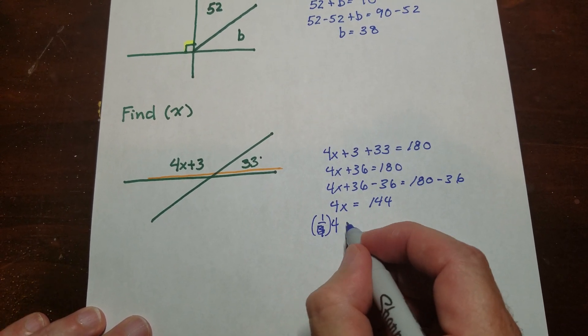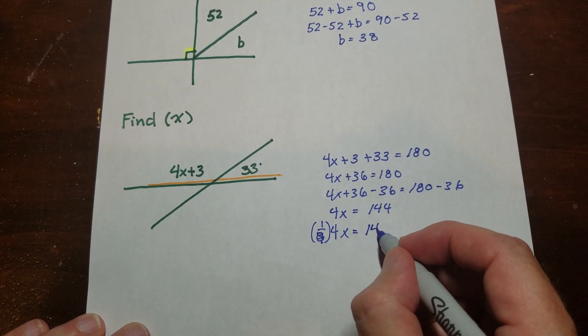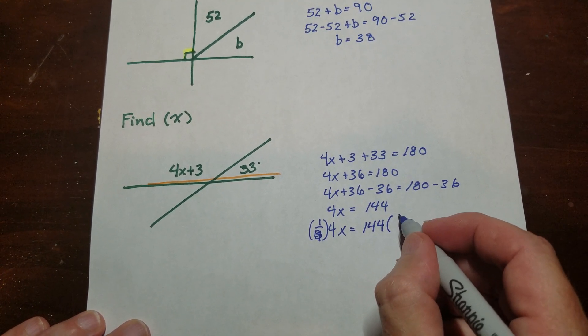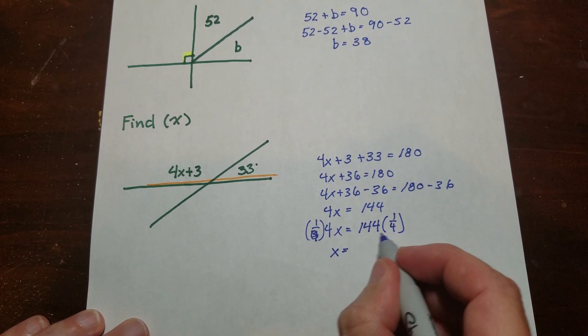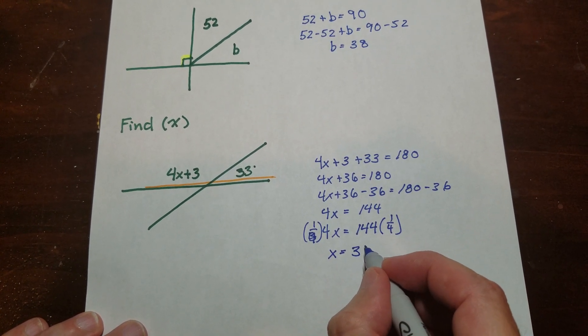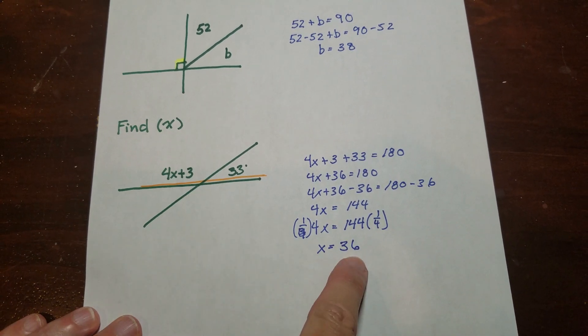And then, this could be called the multiplicative inverse. You could do that too. The multiplicative inverse is fine. But this would actually be the division property of equality. Since I'm dividing. And so that comes to 36. And that's it. Find x. x is 36. I'm done.